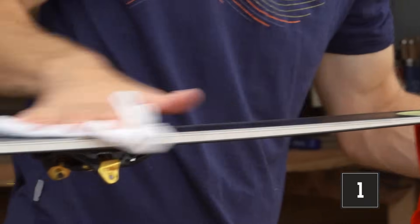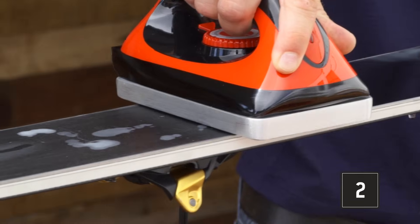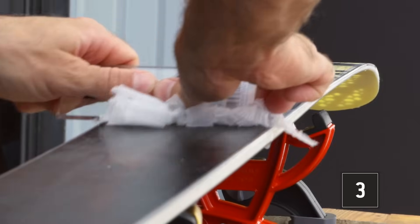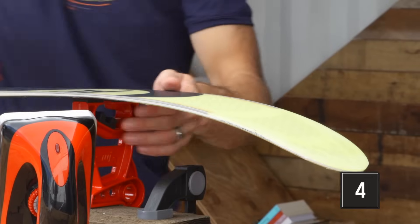To recap, start with clean skis. Spread wax thoroughly over the whole base. Scrape the extra wax off and finish up with your brushes.